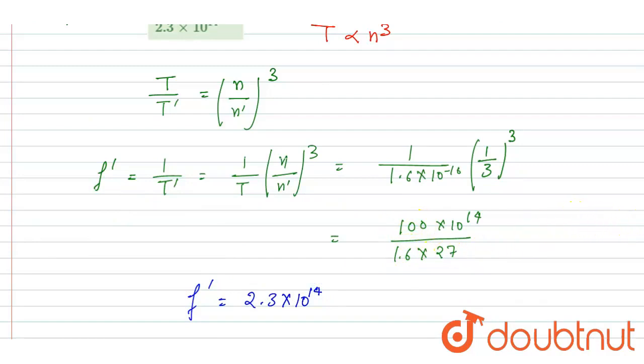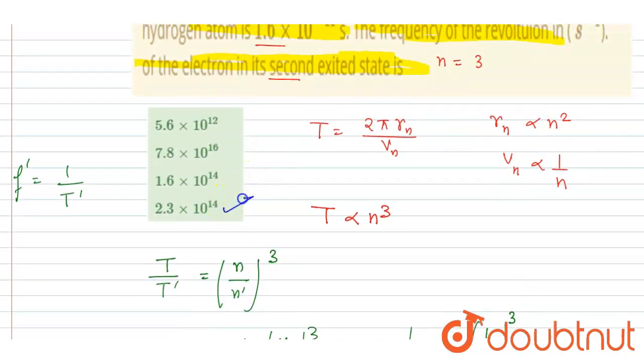After calculation I will write it is 2.3 into 10 to the power 14. If you divide this 100 by 1.6 and into 27, you'll get 2.3. So D here will be the correct option. Thank you.